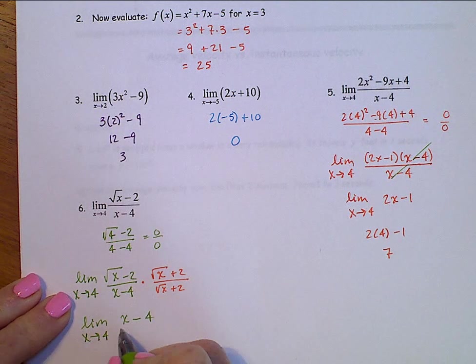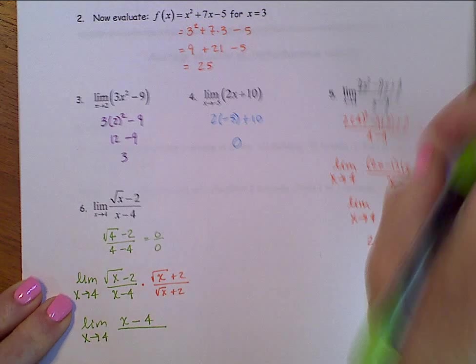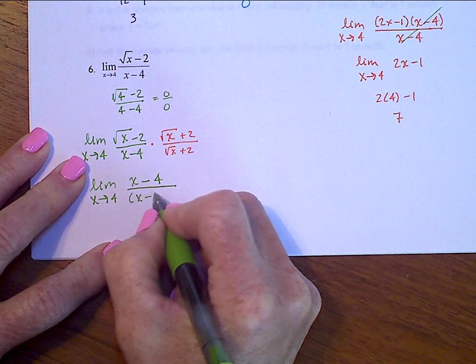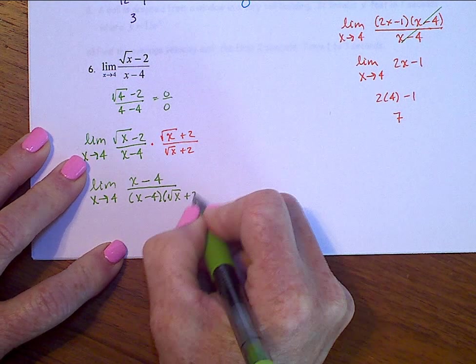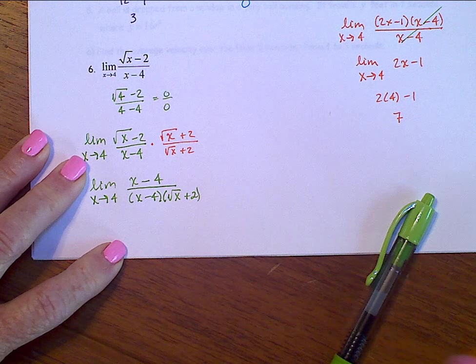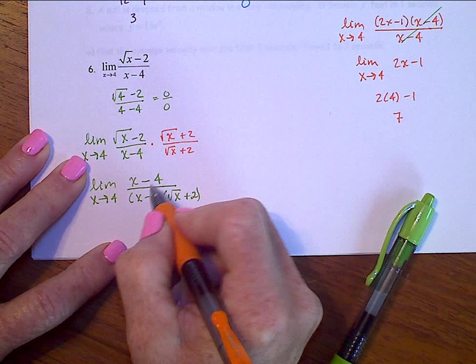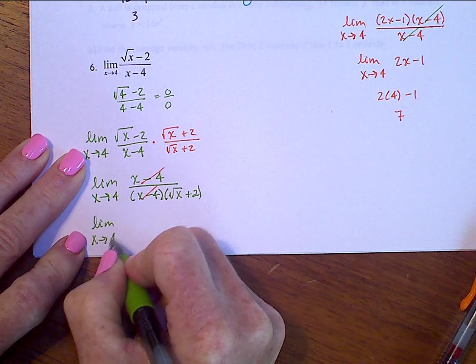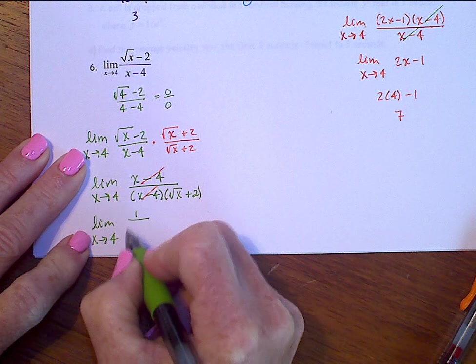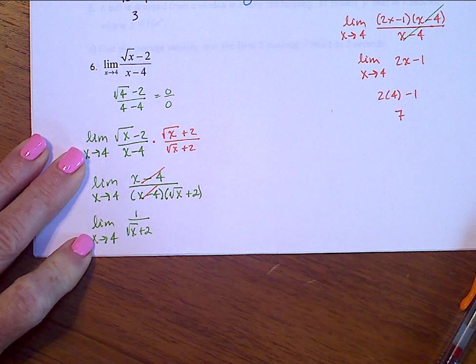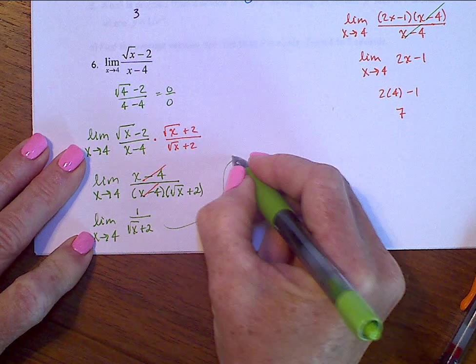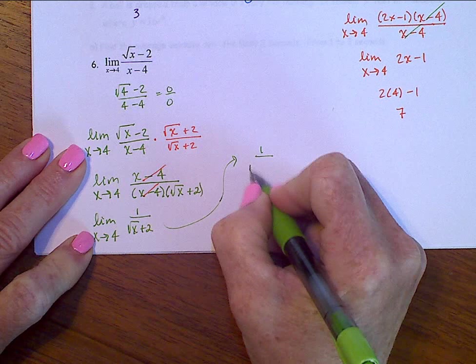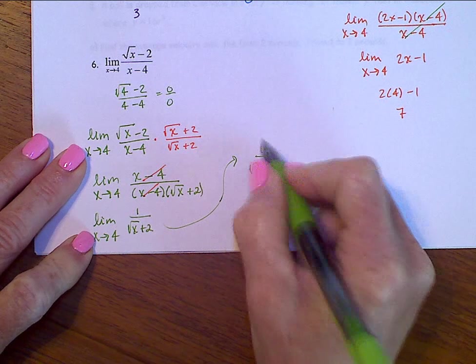Now, kind of the trick, if you will, here is to not multiply out that denominator. Leave that denominator in factored form because now you can see x minus 4 divide out. And we'll have the limit as x approaches 4 of 1 over square root of x plus 2. And now we can substitute in that 4, and we have square root of 4 plus 2, 1 fourth.